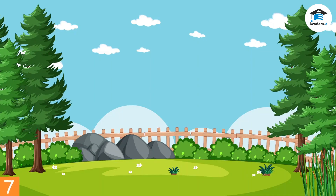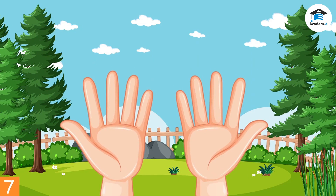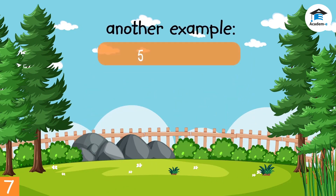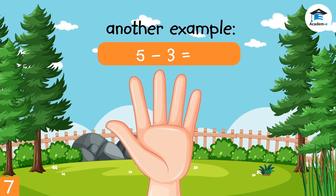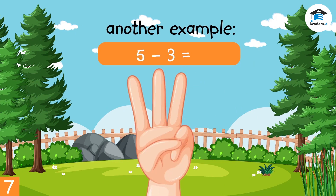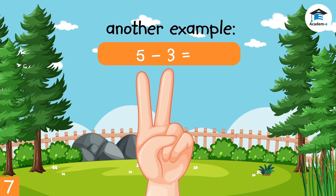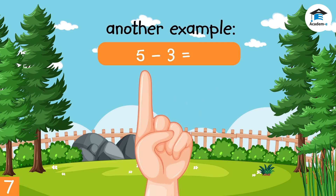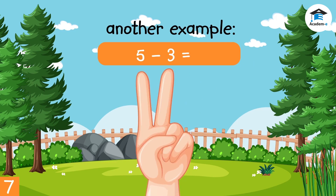Another method to subtract is by using your fingers. For example, 5 minus 3. First, put out 5 fingers, then we need to put down 3: 1, 2, 3. How many fingers are left? 1, 2. So the answer is 2. 5 minus 3 is equal to 2.